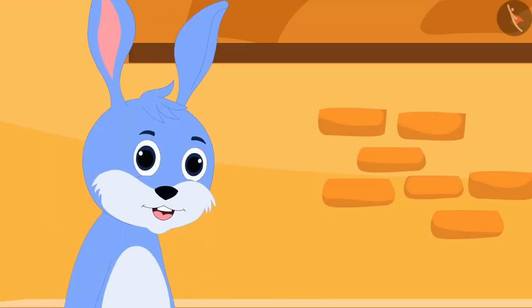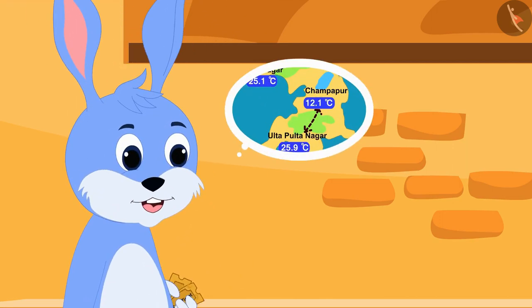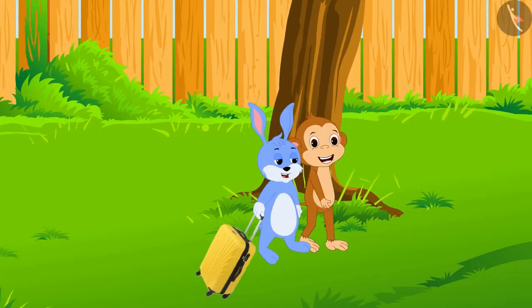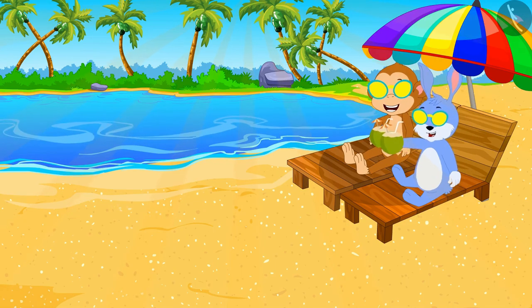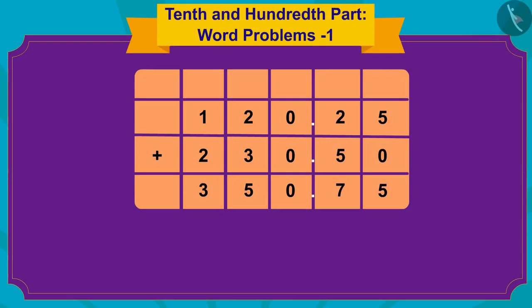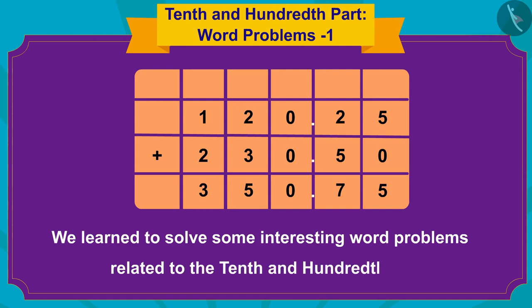Bunny got very excited. He bought two train tickets to go from Champapur to Ulta Pulta Nagar, and together Bunny and Babban reached Ulta Pulta Nagar for holidays. Children, in this video we learned to solve some interesting word problems related to the tenth and hundredth part. In the next video we will learn to solve some more interesting problems related to this.